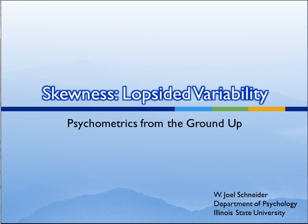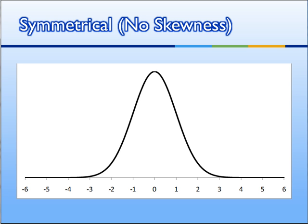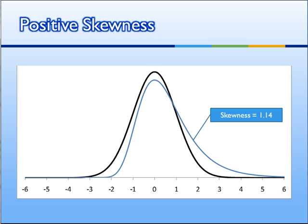Today we're going to talk about skewness, or as I like to call it, lopsided variability. Some distributions are symmetrical — they have no skewness. Skewness is how much a distribution deviates from symmetricality. One of the most famous distributions without any skew is the normal distribution, which is the distribution with which we compare all others. This blue distribution is positively skewed, with a skewness of 1.14. The tail on the right has a lot more stuff than the tail on the left compared to the normal distribution — it's lopsided. The long tail goes in the positive direction, and hence we say it has positive skewness.